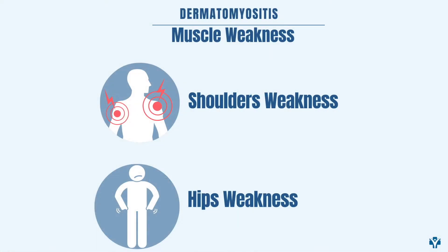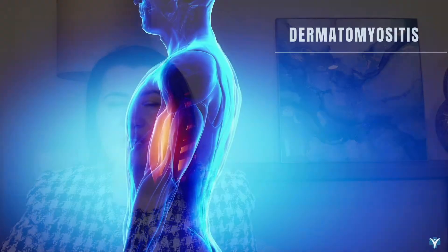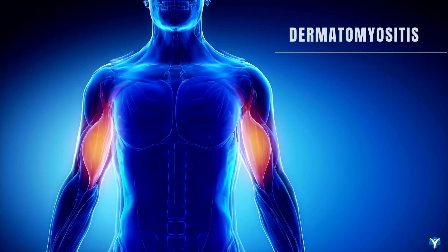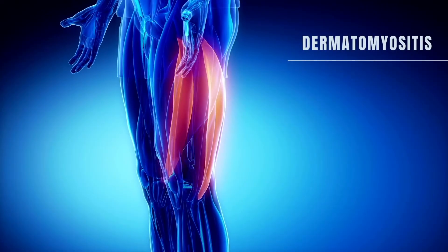Muscle Weakness. Patients will describe proximal muscle weakness involving the upper part of the arms and legs. The weakness is gradual, usually over the course of a few months, and it can involve the shoulders and pelvic area. Patients will describe getting quickly tired when they comb or wash their hair in the shower and when they use their arms for a repetitive action.